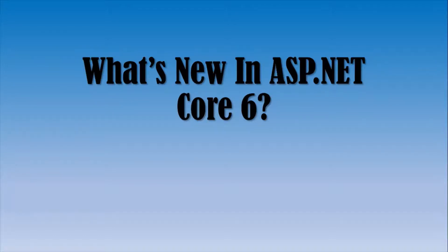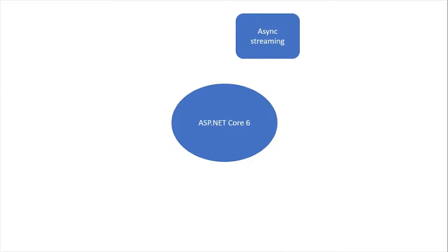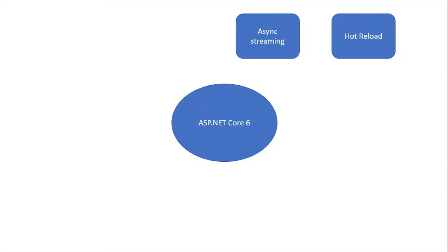ASP.NET Core 6 is the latest framework. The first feature I'd like to mention is asynchronous streaming — data from the server is streamed asynchronously without any buffering, making performance quicker and faster. There is also a hot reload feature, which means if you apply changes to your C#, CSS, or Razor files while the application is running, there is no need to rebuild or restart — your changes will be reflected immediately.